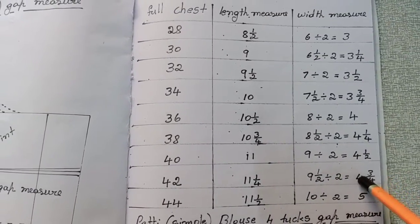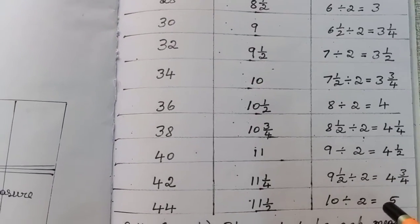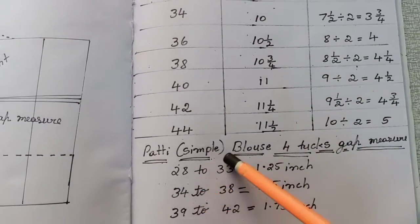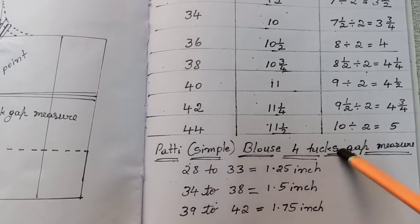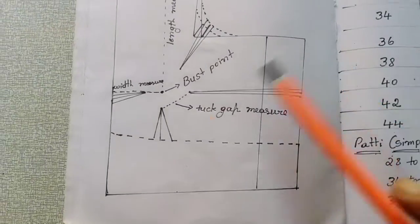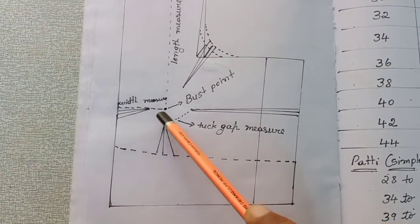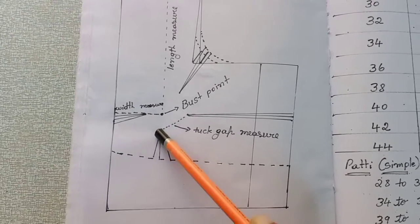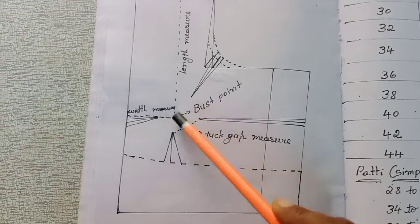The new cuts should be easier, cutting out. This is 4 tucks gap measure. This is a gap measure, and this is two and a half. This is a gap measure.